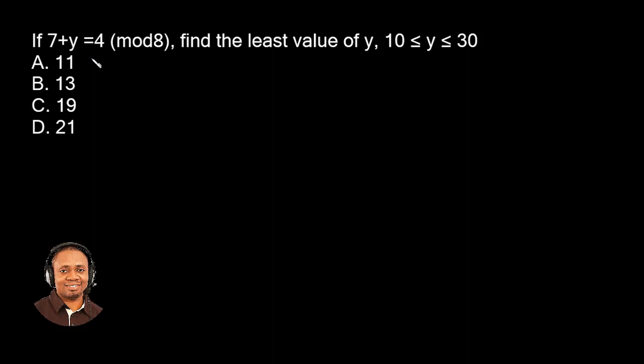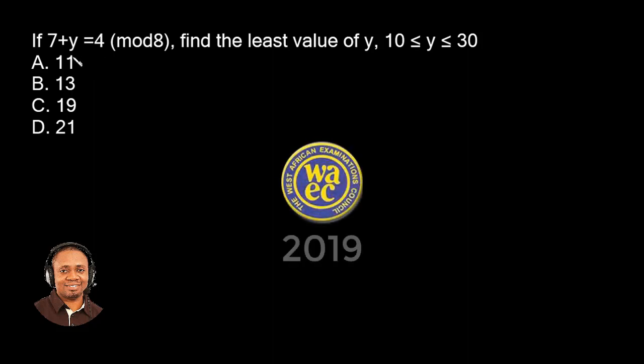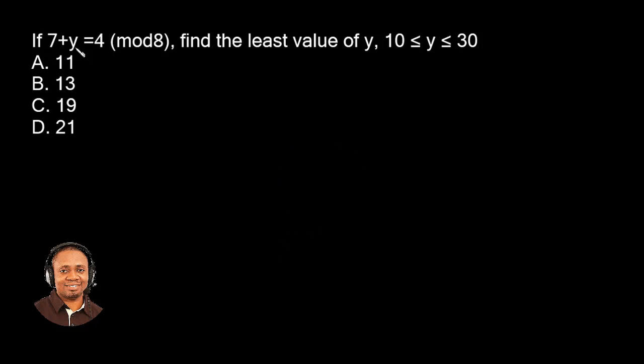Hi, I'm Oluwakemi. I'm excited to have you here again. This is YEC Math 2019 and the question goes this: If 7 plus Y equals 4 modulo 8, find the least value of Y if Y is greater than or equal to 10 and less than or equal to 30.